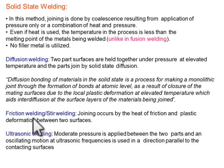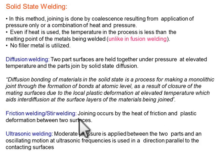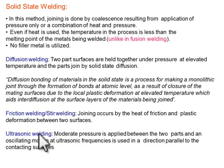The second type is friction welding, also called stir welding. When we provide relative motion between two surfaces, the heat increases, temperature also increases between the surfaces, plastic deformation occurs, and due to this the joining process is done in friction welding.